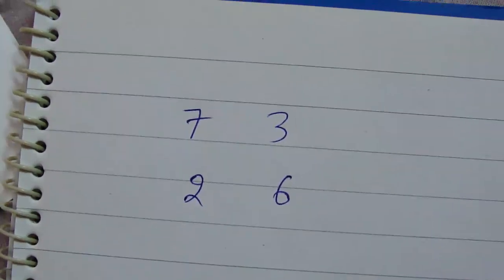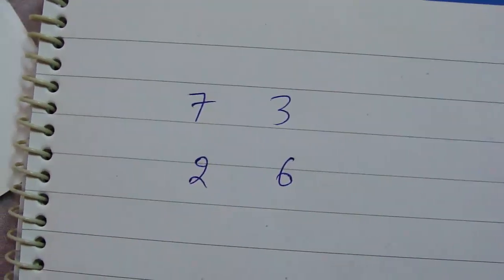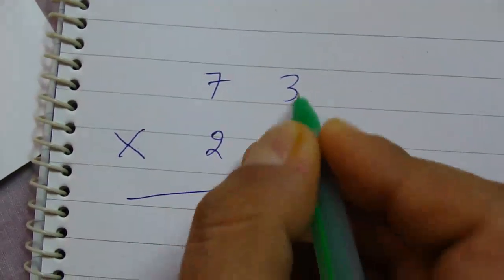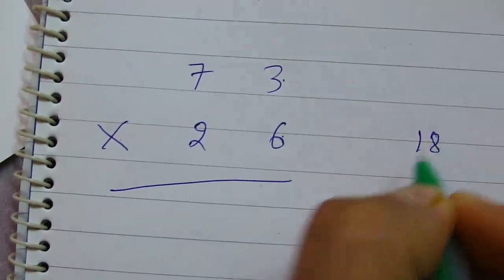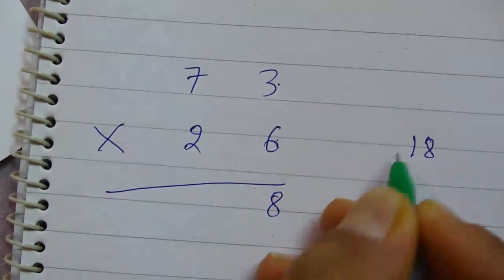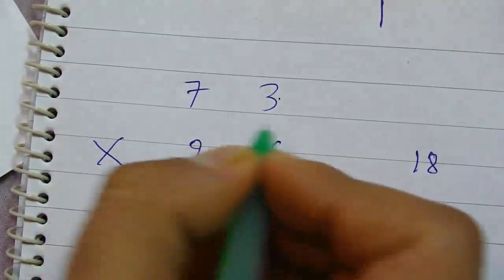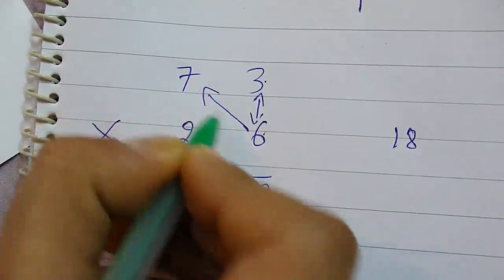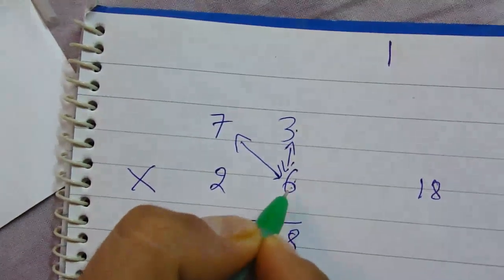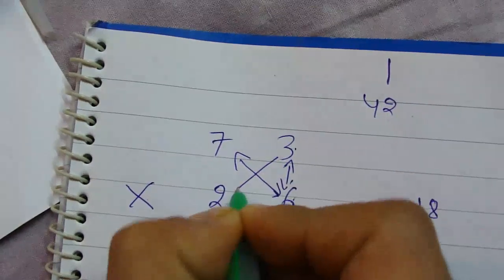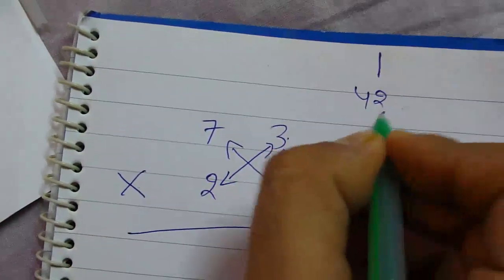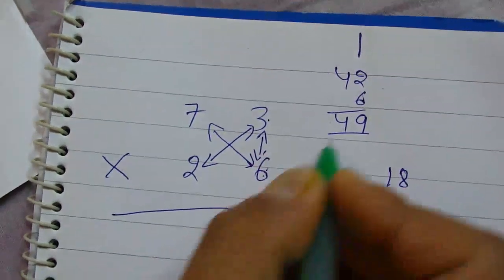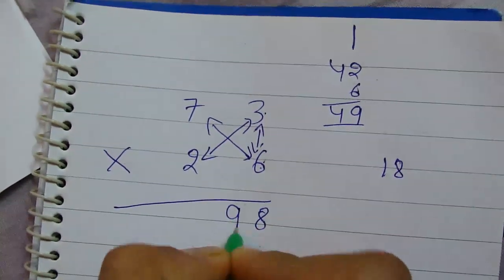Here we go: 6 times 3 equals 18. We write 8 here and carry 1. First step done. Second step, cross: 7 times 6 equals 42, 3 times 2 equals 6, so 48 plus carry equals 49. We write 9 and carry 4.